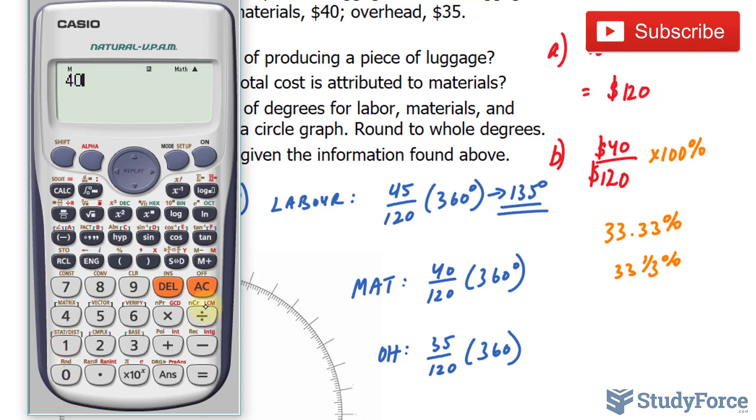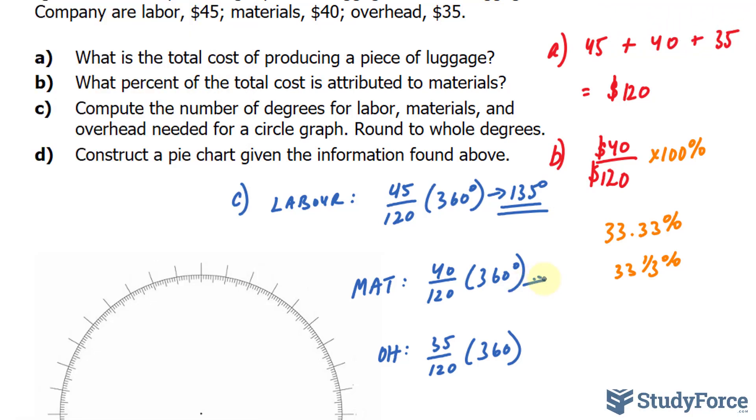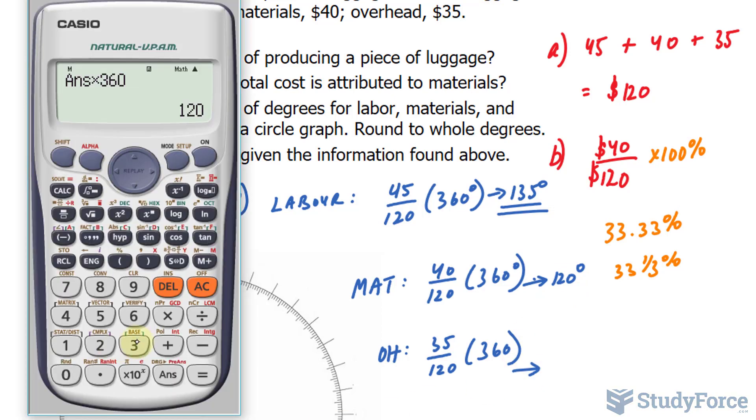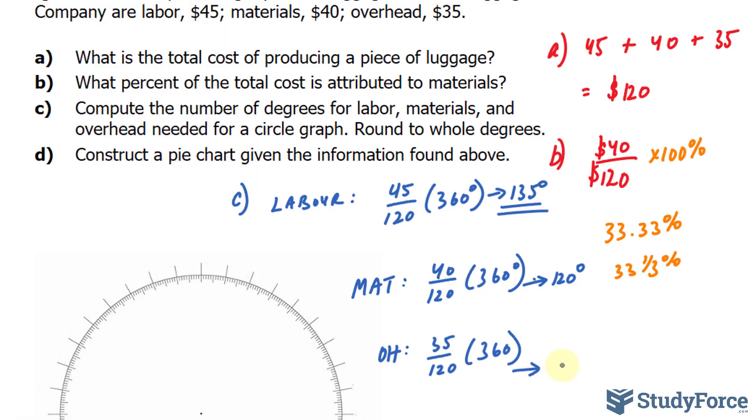Now, 40 divided by 120 times 360, that gives us 120 degrees. And lastly, 35 divided by 120 times 360, that gives us 105 degrees.